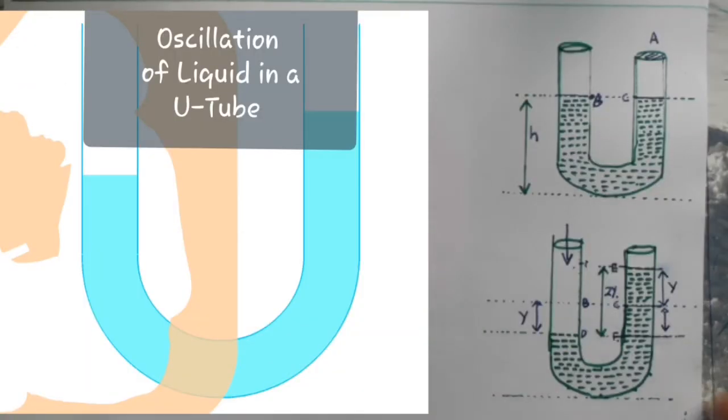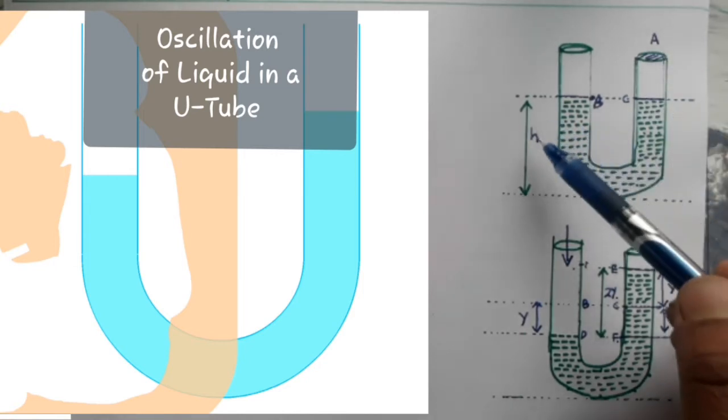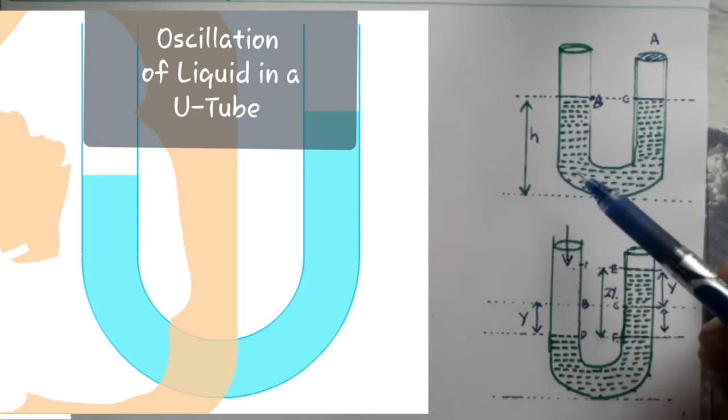Oscillation of a liquid column in a U-tube. We have a U-shaped tube of area of cross section A and we fill it with the liquid, say water, up to height H.